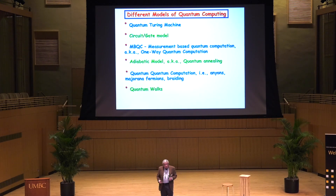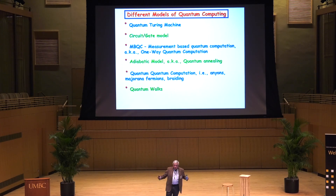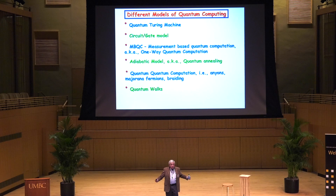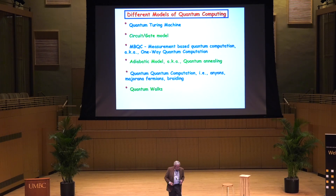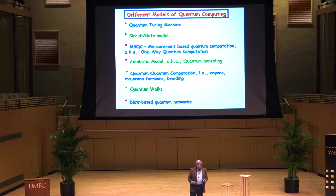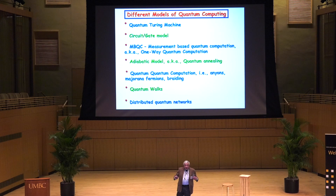And finally, there are quantum walks. You can think of a quantum drunk at a lamppost who takes random steps in superposition, and as time goes on, he's all over the place. I'd also like to mention distributed quantum computing — quantum computers do not need to be localized. In fact, there's some evidence that it's best to have them distributed over a quantum network.